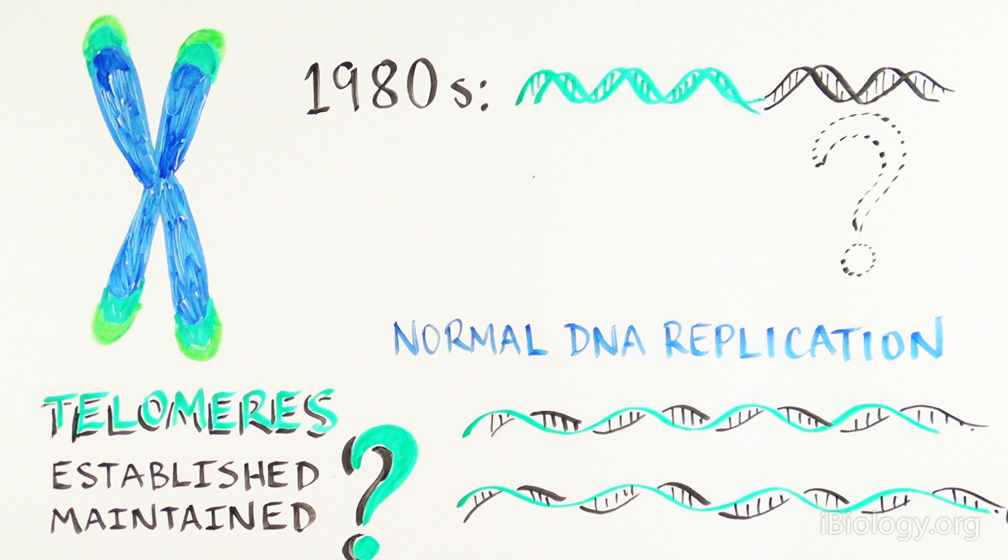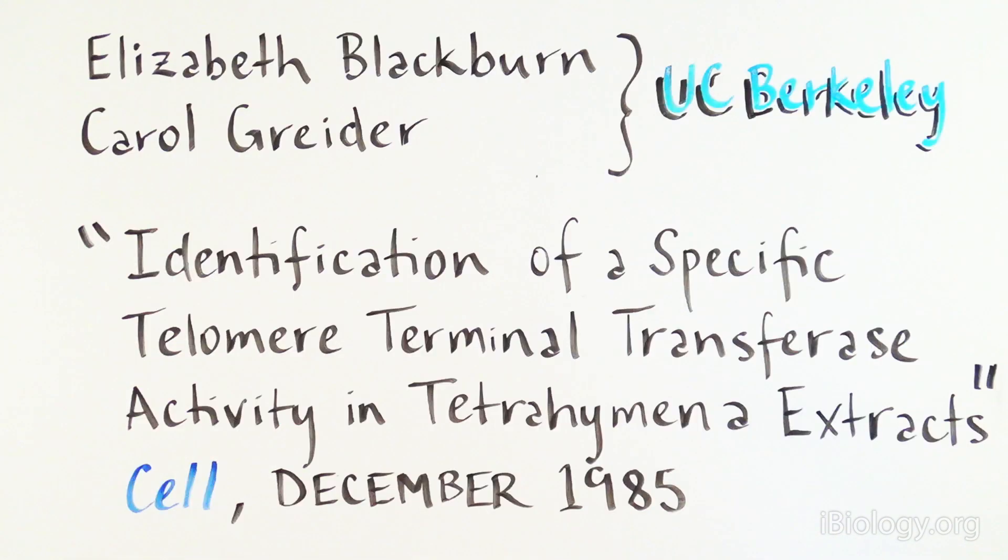In the 1980s, this was an important missing piece of biology that was quite a mystery. This puzzle was solved by Elizabeth Blackburn and Carol Greider at the University of California, Berkeley, and published in their paper titled Identification of a Specific Telomere Terminal Transferase Activity in Tetrahymena Extracts in Cell in December 1985.